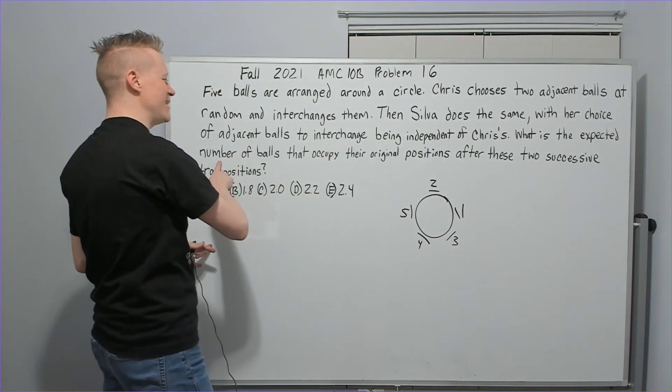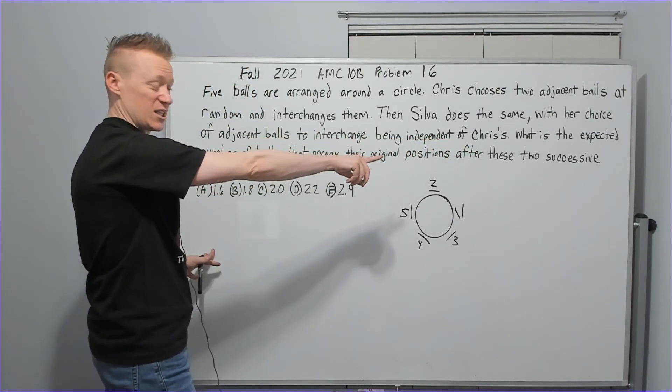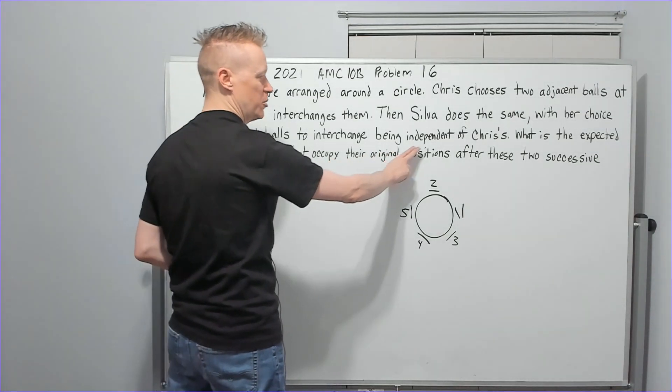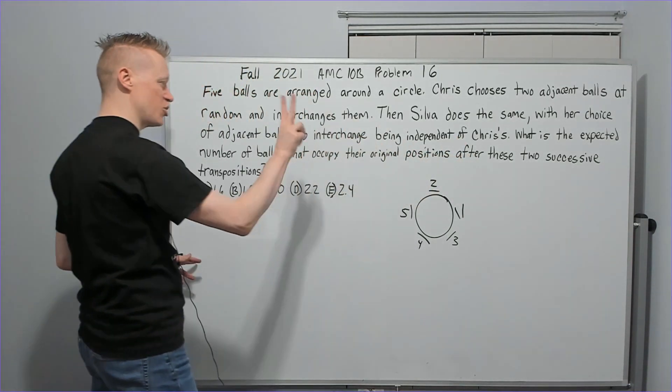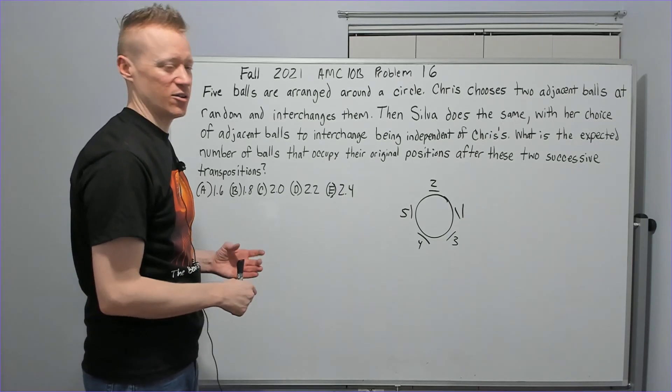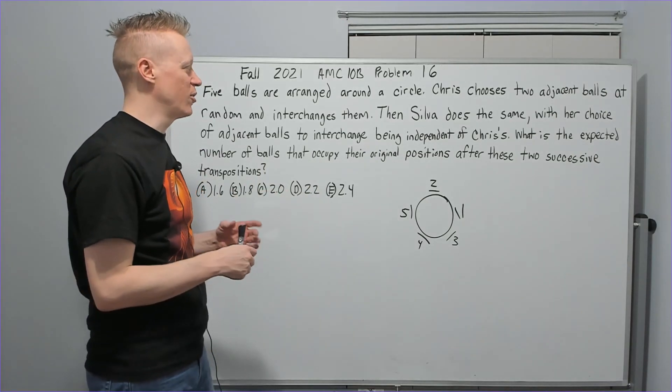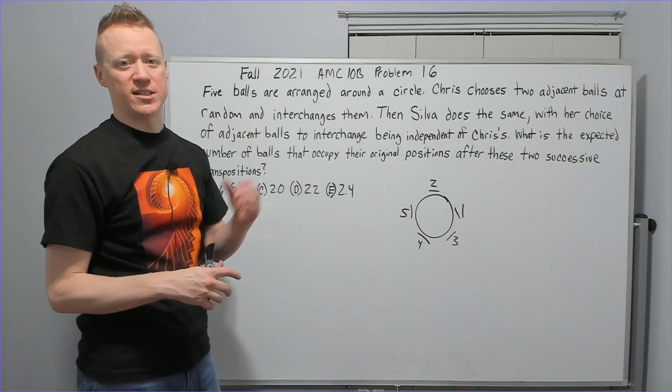So then what? What is the expected number, that's your hint that you're doing expected value, of balls that occupy their original positions after these two successive transpositions? Okay, so Sylvia, Sylva rather, I think it's Sylvia Bernardo and Sylvia from before. Sylva has five choices as well.